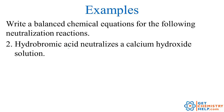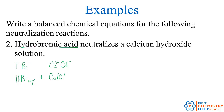Example two: hydrobromic acid neutralizes a calcium hydroxide solution. When you see 'hydro' on the front and '-ic acid' on the end, that means the root anion ended in '-ide'. So hydrobromic acid must have come from bromide — Br-. Combining with hydrogen ion, hydrobromic acid is HBr, aqueous. Calcium is Ca2+, hydroxide is OH-, so to make a neutral compound, we have calcium with two hydroxides: Ca(OH)2, aqueous.